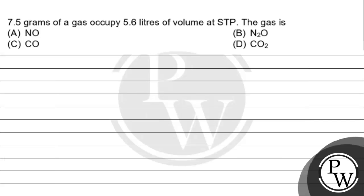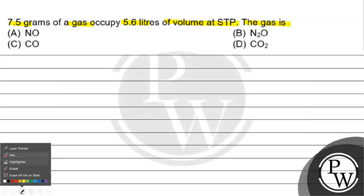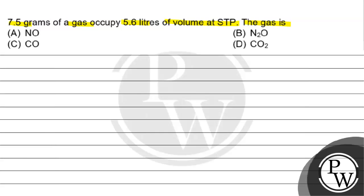Hello! Let's read this question. The question says: 7.5 grams of a gas occupies 5.6 liters of volume at STP. The gas is option A: NO, option B: N2O, option C: CO, option D: CO2.